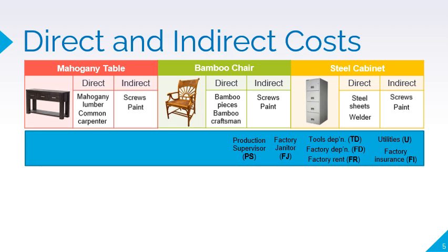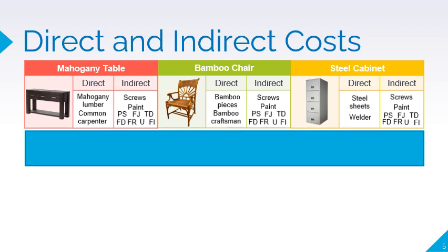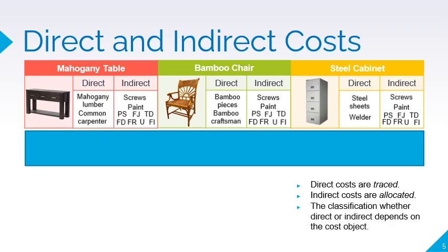Similarly, the wage of the factory janitor, tools depreciation, factory depreciation, factory rent, utilities, and factory insurance are allocated to all three products as indirect costs. Take note that direct costs are traced and indirect costs are allocated. The classification of a cost as direct or indirect depends on its relation to the cost object.